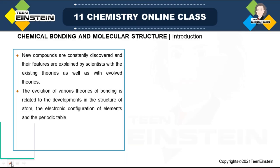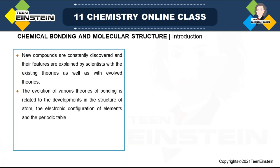This conference will now be recorded. Hello everyone. We are starting a new unit: chemical bonding and molecular structures. The topics we are going to discuss include: introduction, Kossel-Lewis approach, octet rule, covalent bond, Lewis structure representation, formal charge, and exceptions to the octet rule.